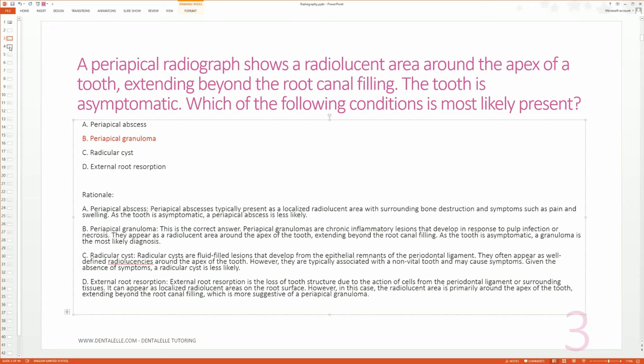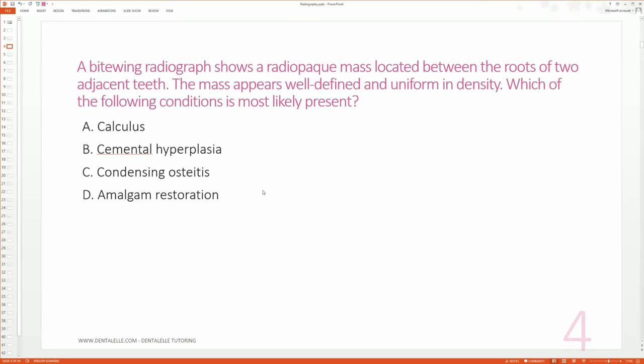So let's go through one more here. A bitewing radiograph shows a radiopaque mass located between the roots of two adjacent teeth. The mass appears well defined and uniform in density. Which of the following conditions is most likely present? What do you think? I'll give you guys some time to think about it—pause the video once again if you need more time.